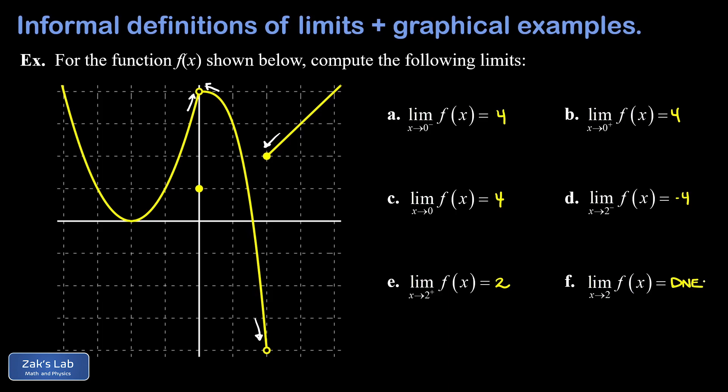Because the left and right limits at x equals 2 don't agree, the ordinary limit does not exist. In the next video we'll talk about how to compute one-sided limits and ordinary limits starting from the formula for a piecewise defined function — handling limits algebraically instead of relying on a graph.